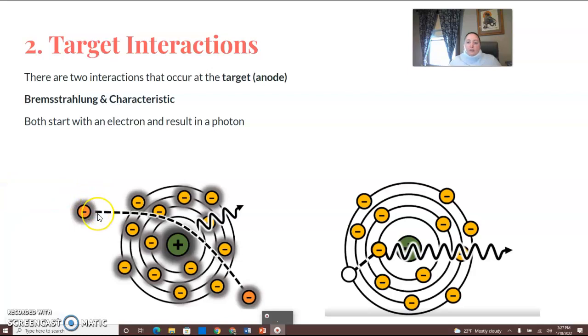So I want you to be able to recognize them from these pictures, can you pick them out? I always feel like bremsstrahlung kind of has this boomerang shape, or you're driving your car around a really tight turn, you've got to make it around this center part. And then characteristic has that cascade effect where these will move places, and then resulting in a photon.